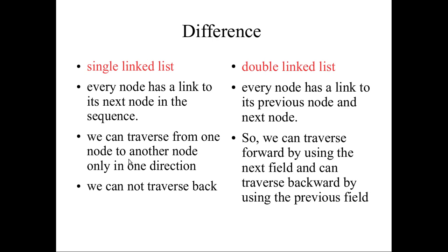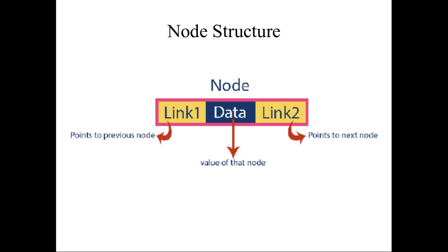If you see the linked list, you can mention the same node. You can select the single linked node and check it out. This is the 2 links — front and back reverse. Here is the node structure. There are three fields. The main field is link one, which points out. The actual data is the value of the node. The next node is pointed out — it is the next node.